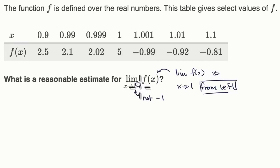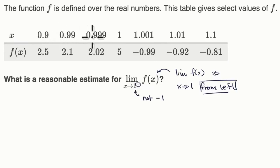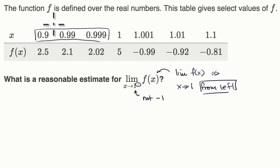We want the limit as x approaches one from the left. Lucky for us, on this table we have some values of x approaching one from the left: 0.9, which is already pretty close to one, then we get even closer to one from the left. Notice these are all less than one but they're getting closer and closer to one. So what we really want to look at is what does f of x approach as x is getting closer and closer to one from the left.